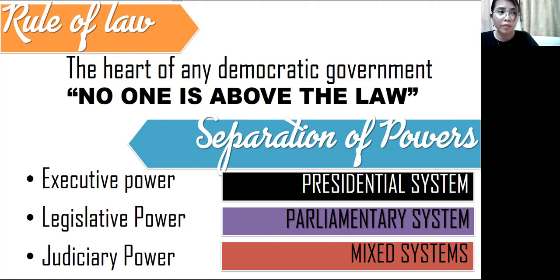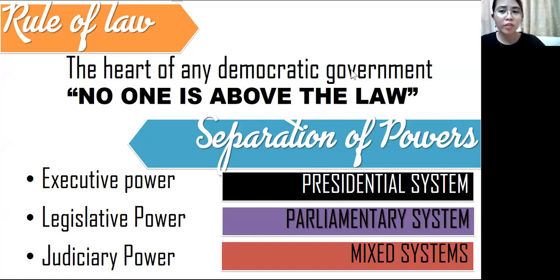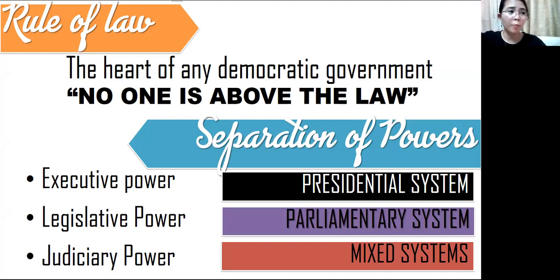What about the mixed system? It is a combination of the presidential system and the parliamentary system, also known as the semi-presidential system. Countries like France and Russia use this. In a mixed system, a president shares executive power with a prime minister as one of the heads of state. The president has the power to appoint cabinet members — the department secretaries — while the prime minister works collaboratively with the cabinet members.